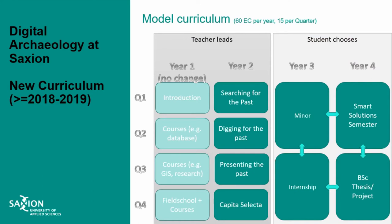The first year of the bachelor program didn't need changes at this point. In the second year we created four different building blocks — the year is divided into four blocks, each with 15 credits and a theme. The first theme is 'Searching for the Past' — drilling and surveying combined with a GIS project. 'Digging in the Past' covers excavation techniques. 'Presenting the Past' covers how to present to fellow archaeologists and the wider public. Students have one obligatory digital archaeology course and can choose two other five-credit courses.